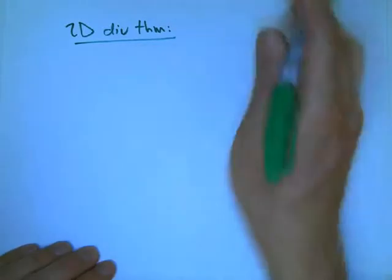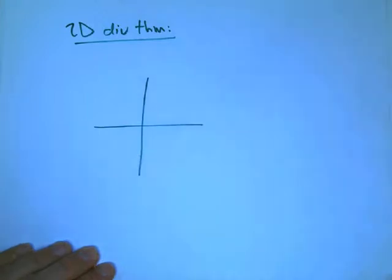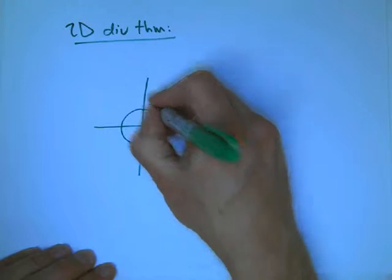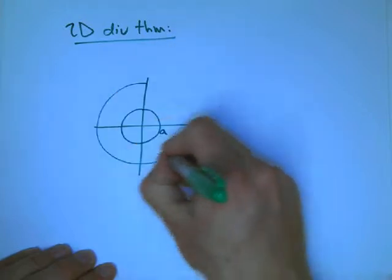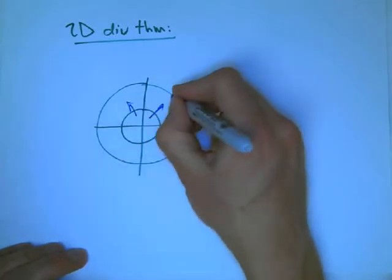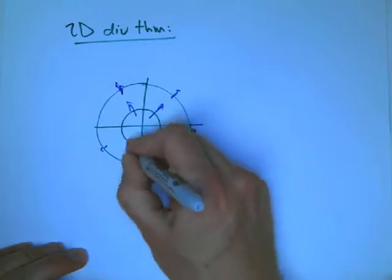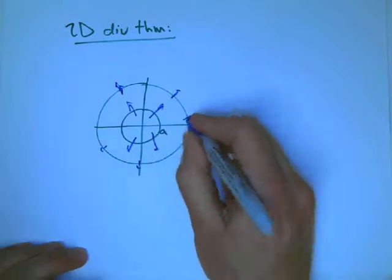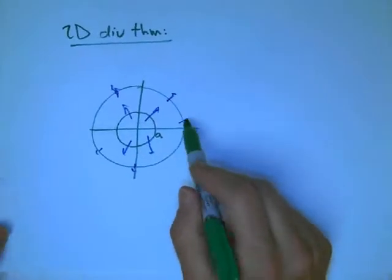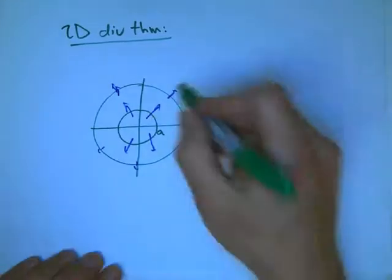But, that doesn't say we can't apply it to a slightly different region. What we can do is use it to explain, in a very profound way, this seemingly fairly simple result that we had, that the circle of radius, say, A, and the circle of radius B, when we calculated the flux of the vector field. That's supposed to be rather smaller. There's big arrows there, smaller arrows there. When we calculated the flux across the small circle and the big circle, they were equal.